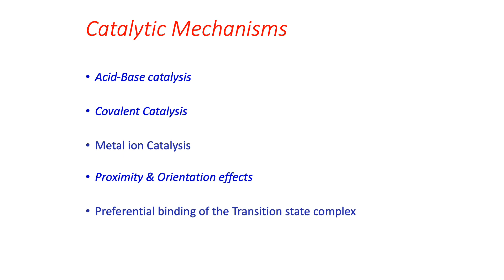These interactions release energy and thereby stabilize the transition state, which decreases the activation energy barrier. Different catalytic mechanisms are employed by enzymes in this process: acid-base catalysis, covalent catalysis, metal ion catalysis, proximity and orientation effects, and preferential binding of the transition state complex. Let's see each one in detail.